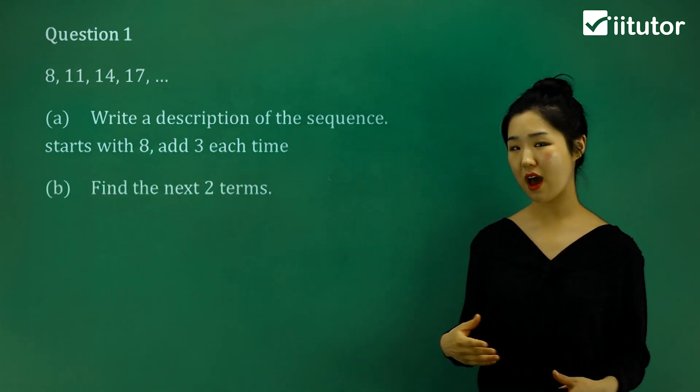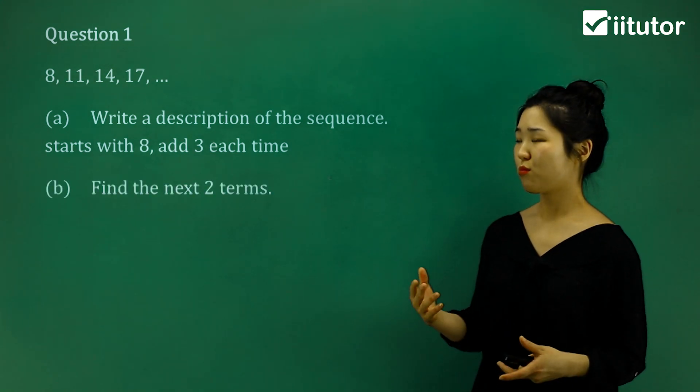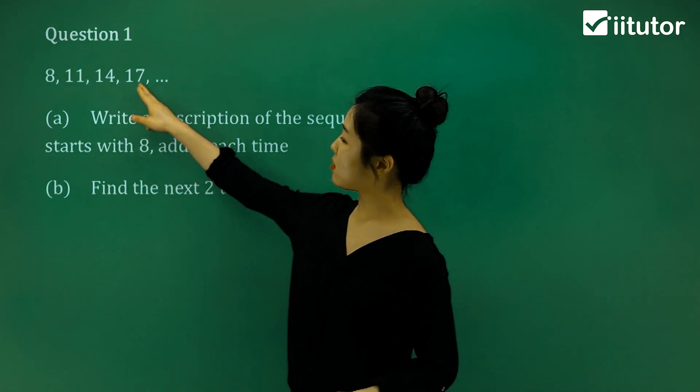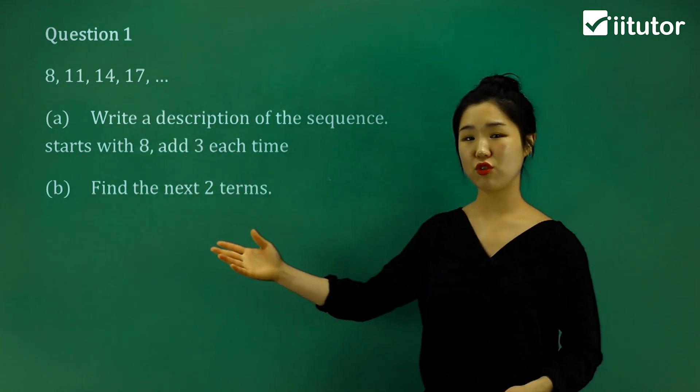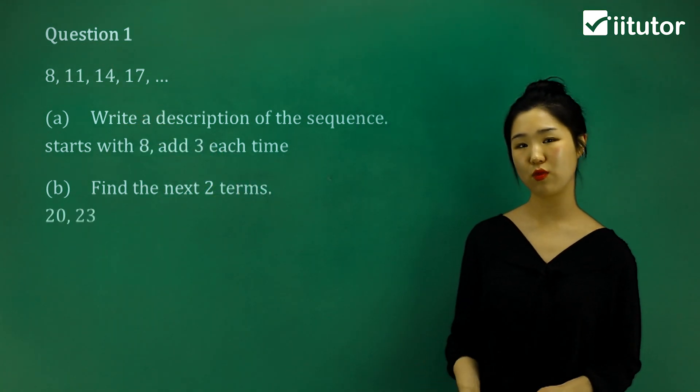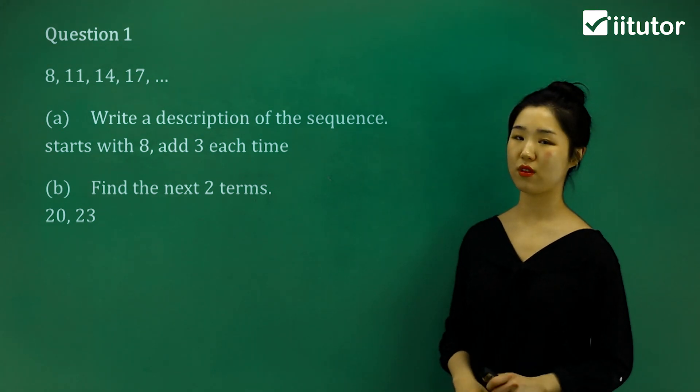So in part B, they ask you to find the next two terms. Guys, just simply do adding 3 each time. So the last number that I have is 17. Adding 3 gives us 20. Adding 3 again gives us 23. And those are the next two terms, as simple as that.